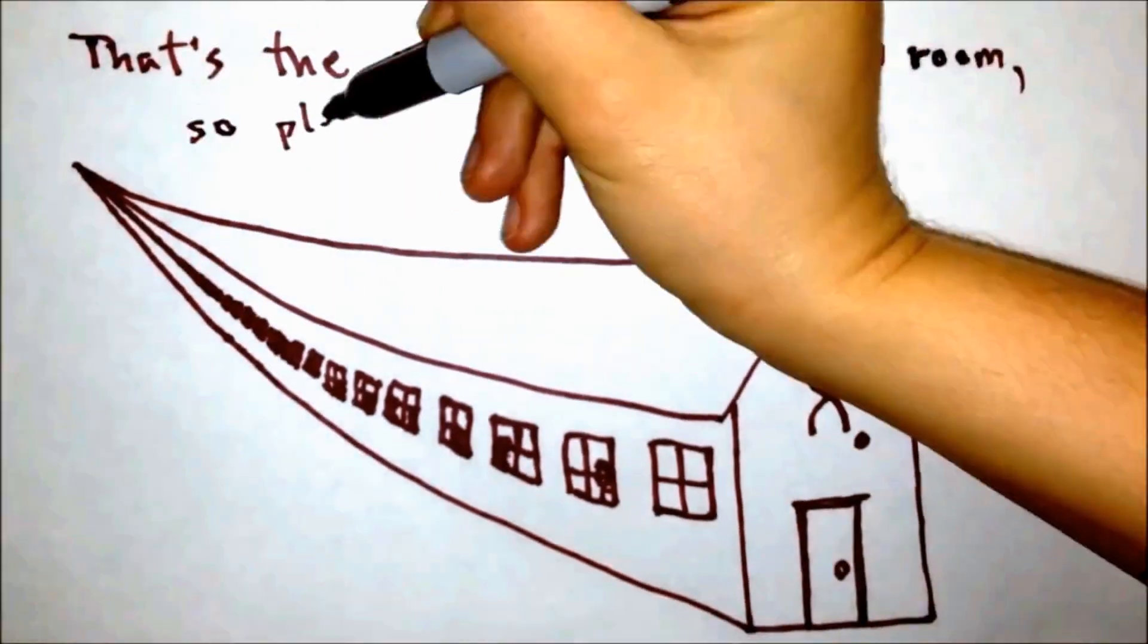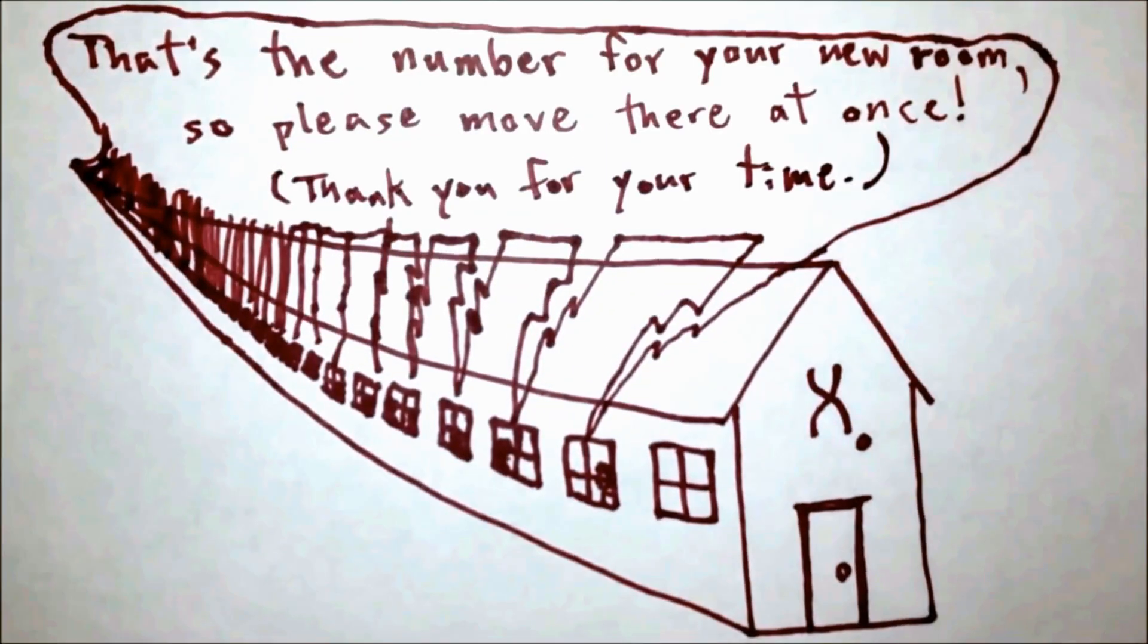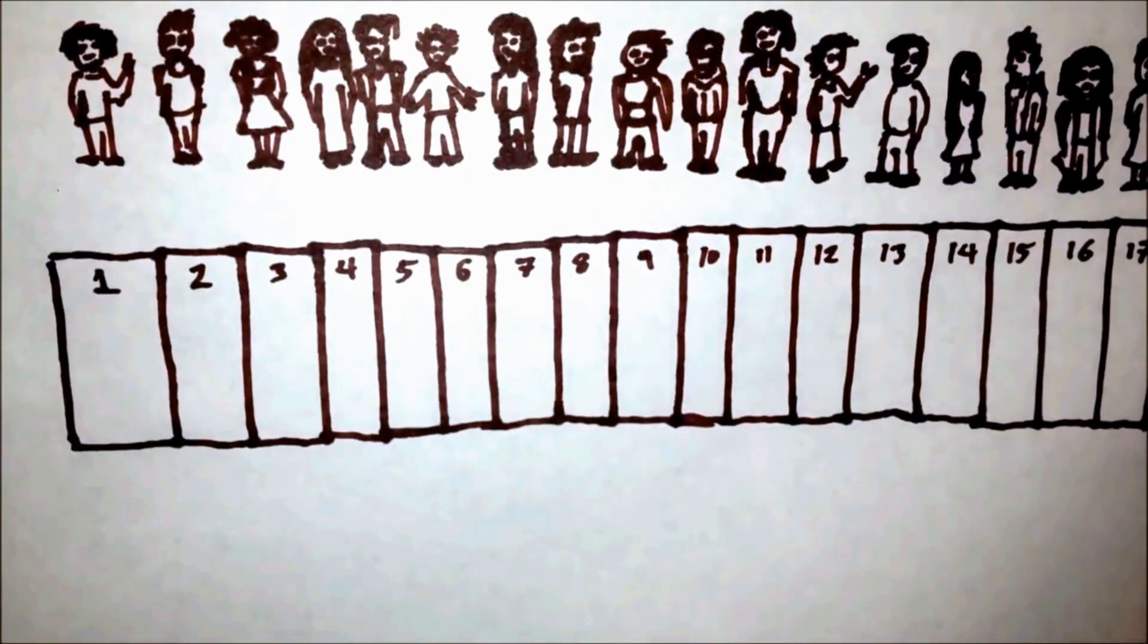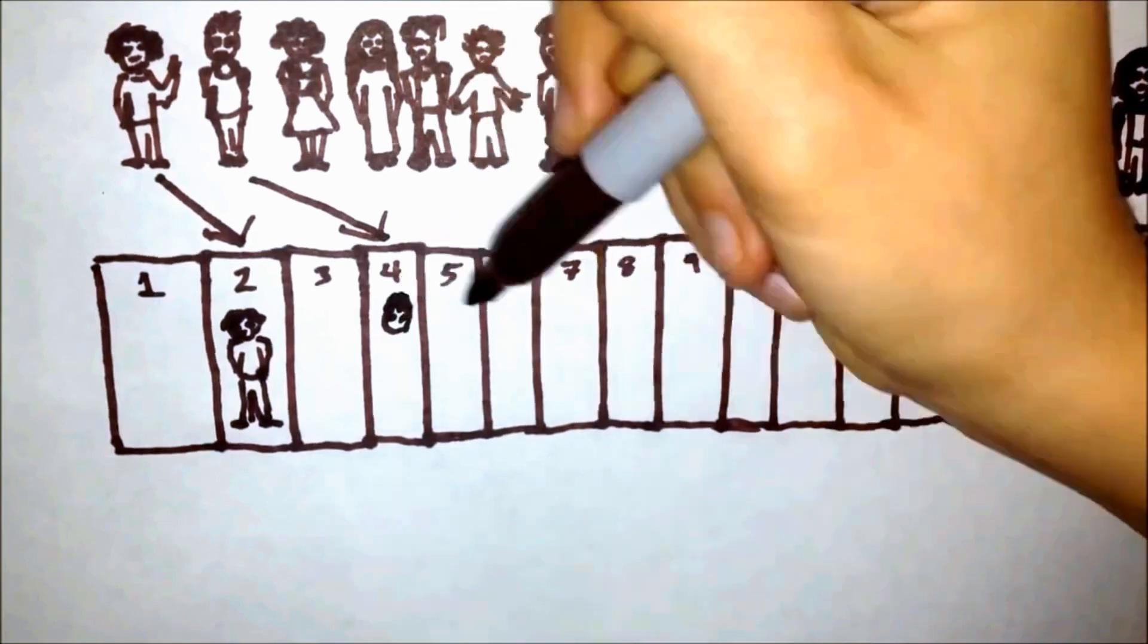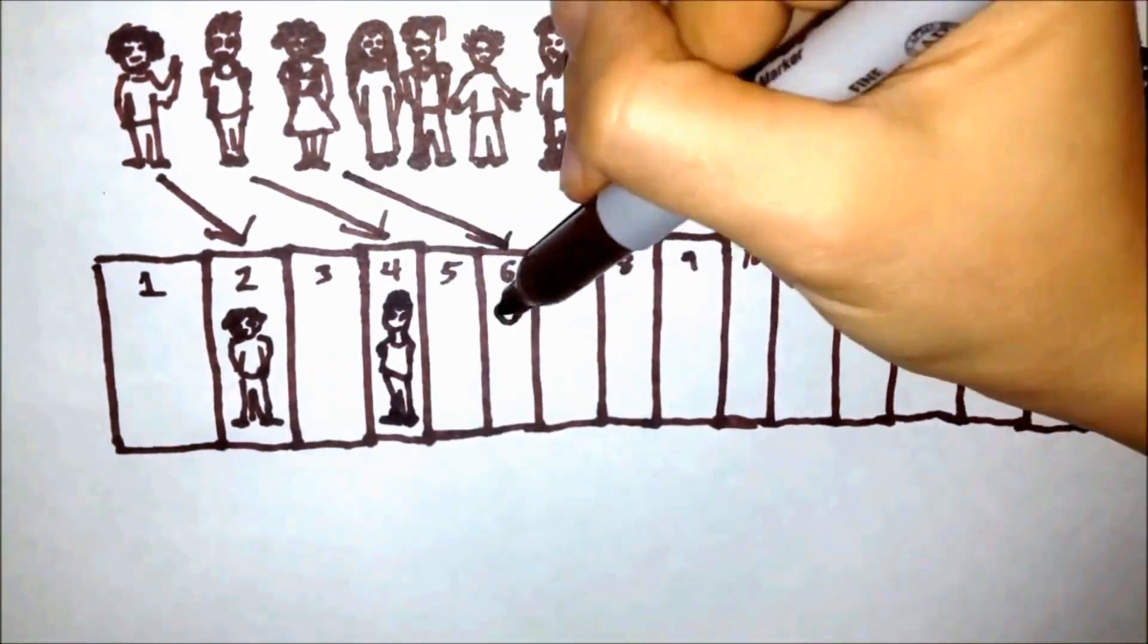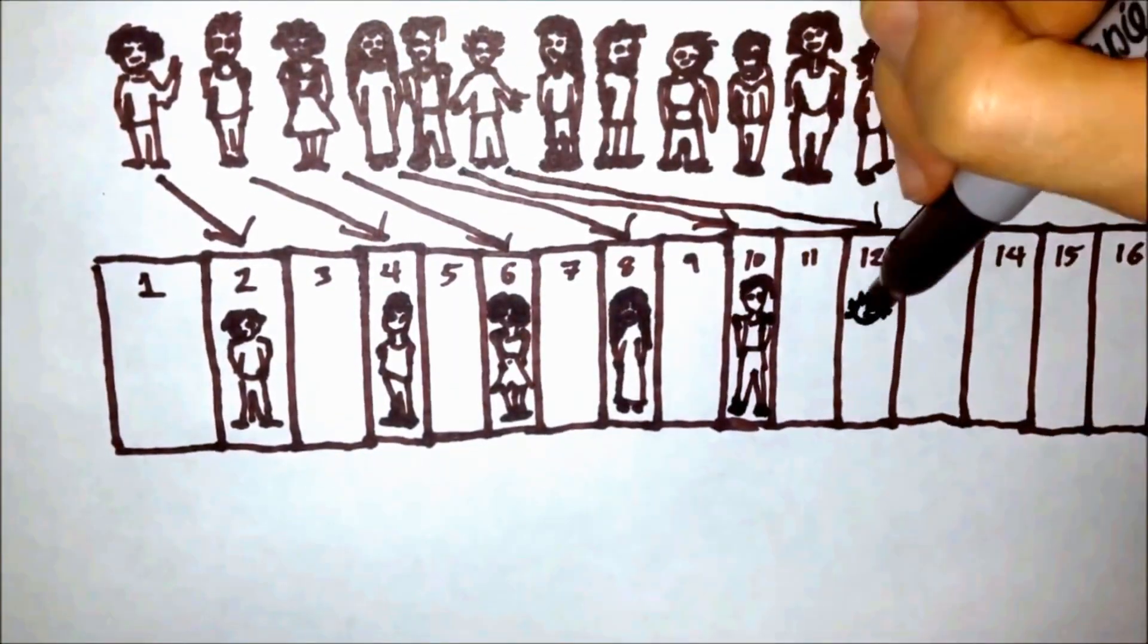Your guests do what you asked. The person in room one moves to room two, the person in room two moves to room four, the person in room three moves to room six, the person in room one million moves to room two million.